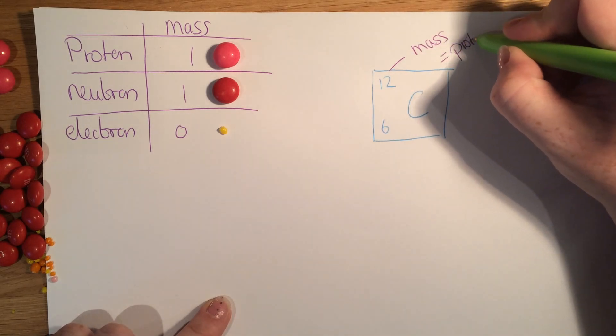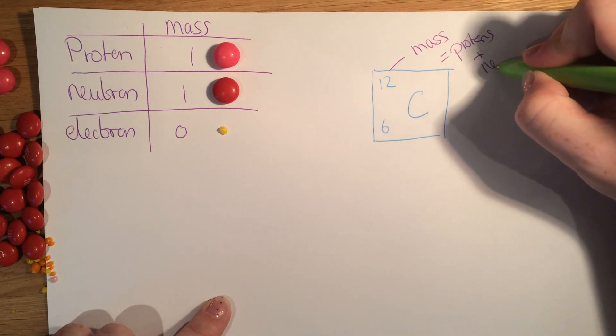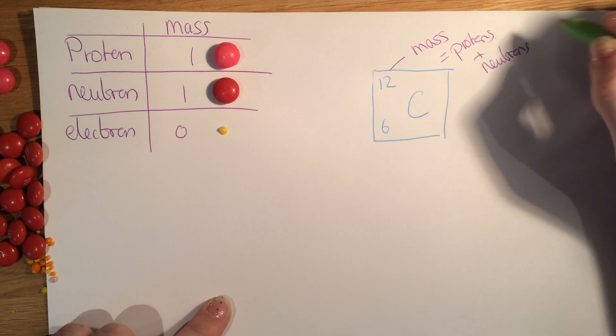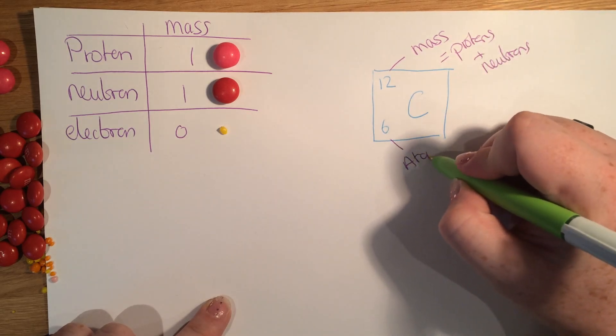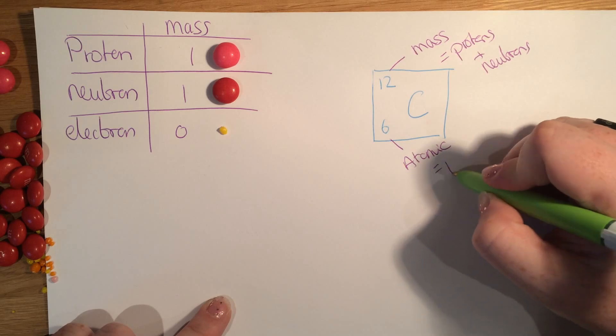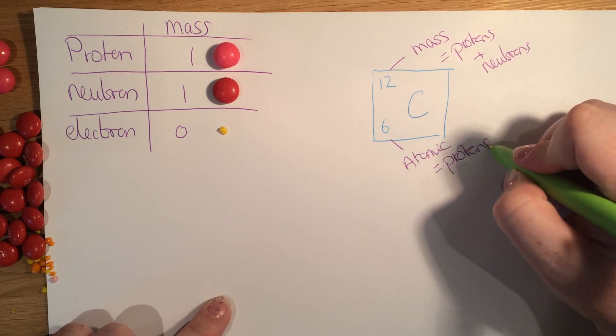This is equal to the protons plus the neutrons. And this little number down here is the atomic number. This is equal to the number of protons.